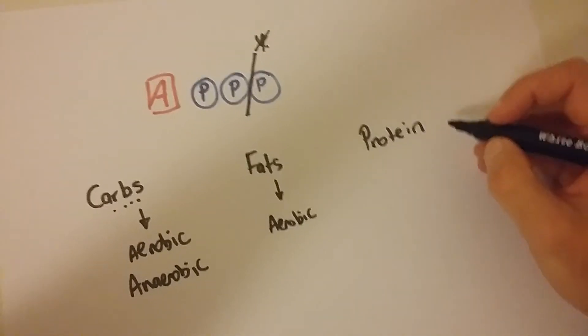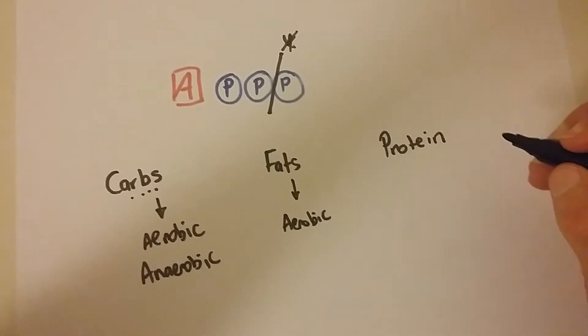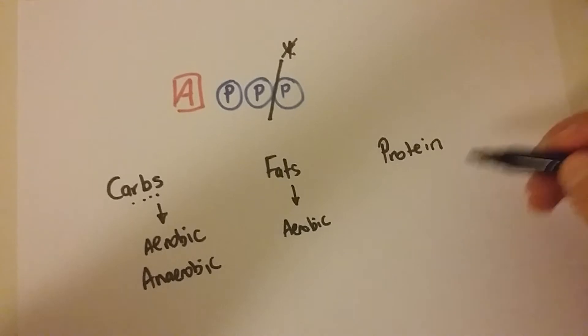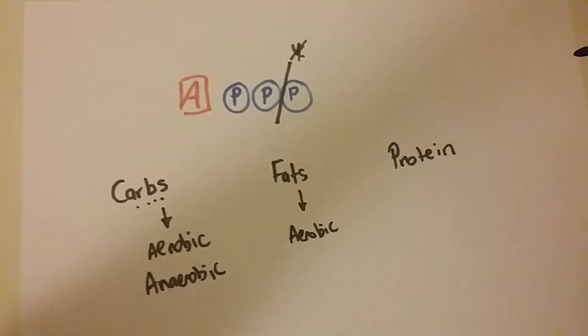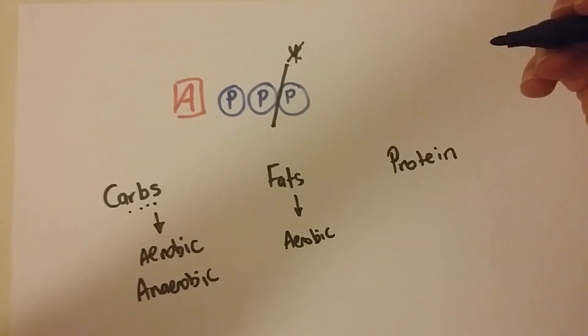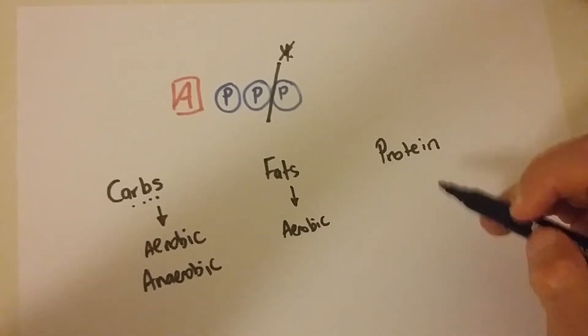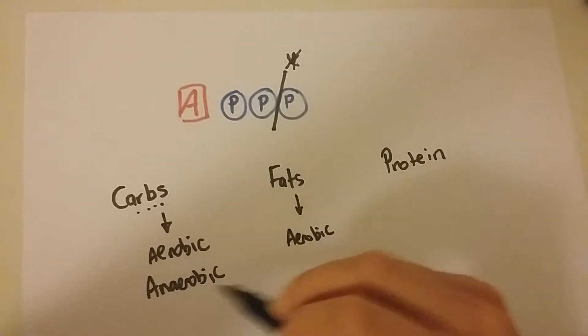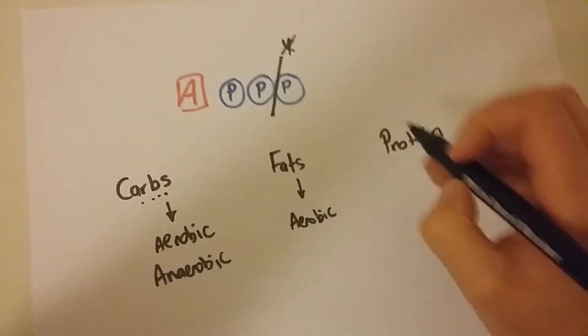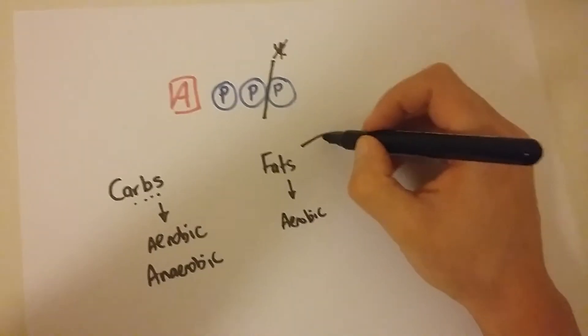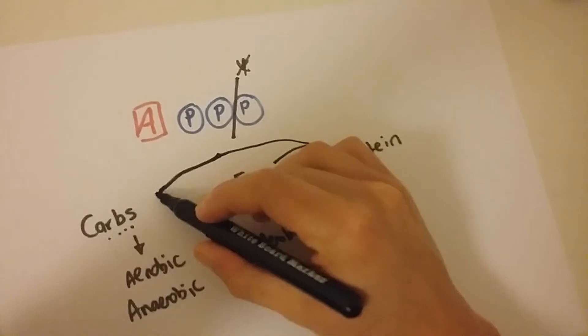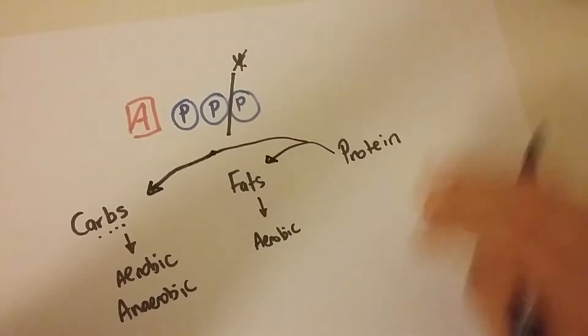Protein, really inefficient at being able, or inefficient should I say, at being able to create us lots of ATP. Doesn't create us lots, it creates us a little bit, and that's because it can't just convert it straight away to ATP like it has been doing with these other two.